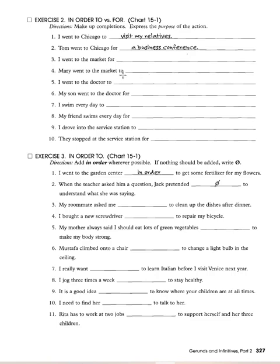The difference: when you use 'to' for purpose, it's short for 'in order to' — you follow it with a verb. When you use 'for,' you simply have a noun — the object of a preposition. Examples: 'I went to the market for groceries.' 'I drove into the service station to get gas.' 'They stopped at the service station for gas.' That's the key distinction.